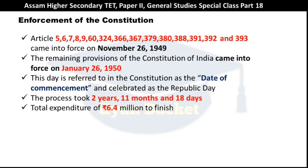When the Constitution was adopted on 26 November 1949, some articles came into force immediately — for example, Articles 5, 6, 7, 8, 9, 60, 324, 366, 367, 379, 380, 388, 391, 392, and 393. The remaining provisions — the major part of the Constitution — came into force on 26 January 1950.